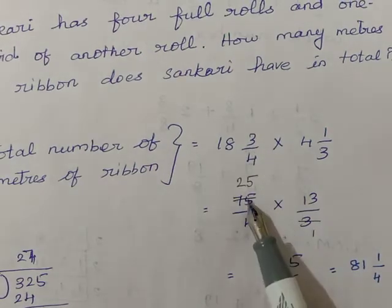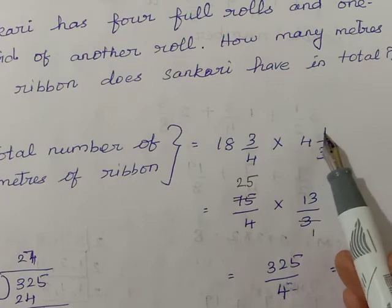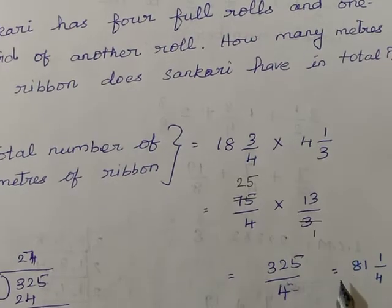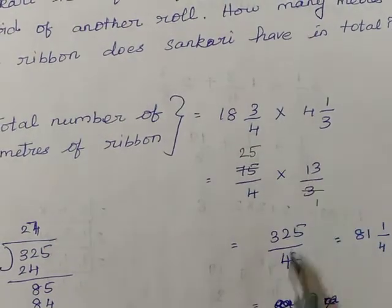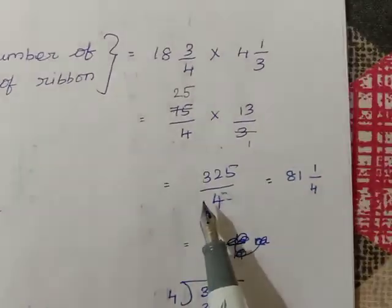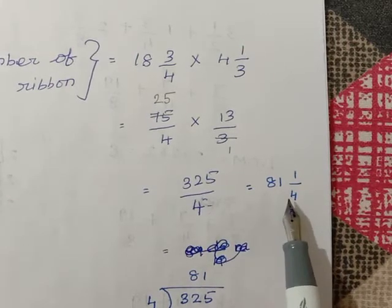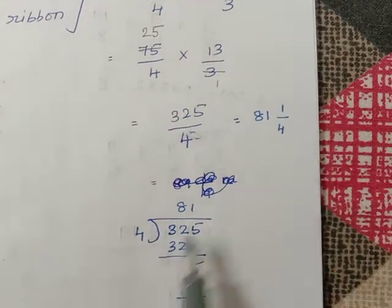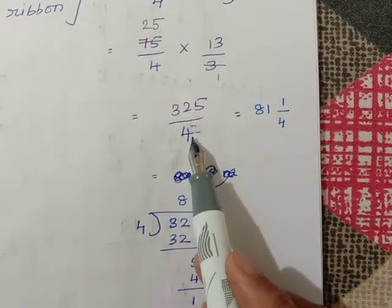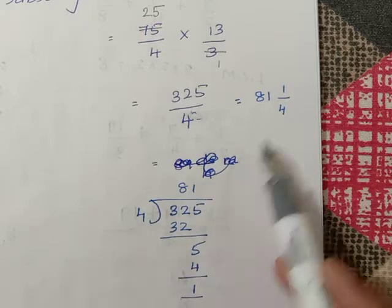18 into 4 plus 3 gives you 75 by 4. And 4 and 1 by 3: 3 fours are 12, plus 1 is 13 by 3. Here 3 divides 75 twenty-five times, so the remaining is 25 into 13, giving 325 divided by 4. Converting to mixed fraction: 325 divided by 4 gives 81 and 1 by 4. So Shankari has 81 and 1 by 4 meters of ribbon in total.